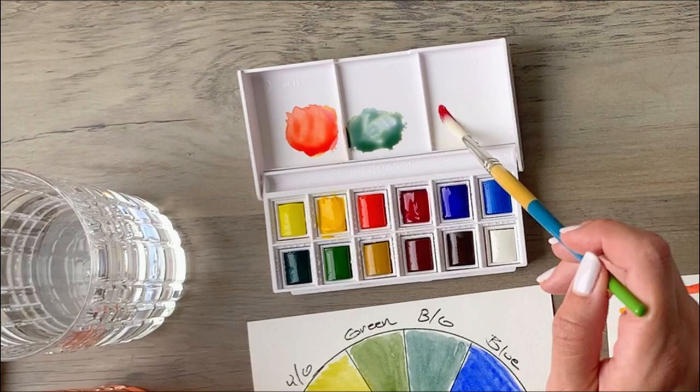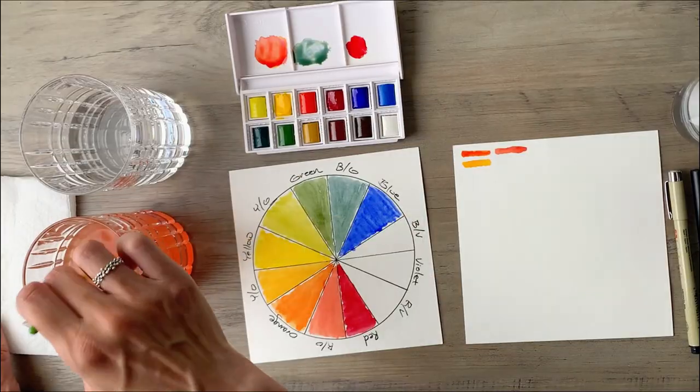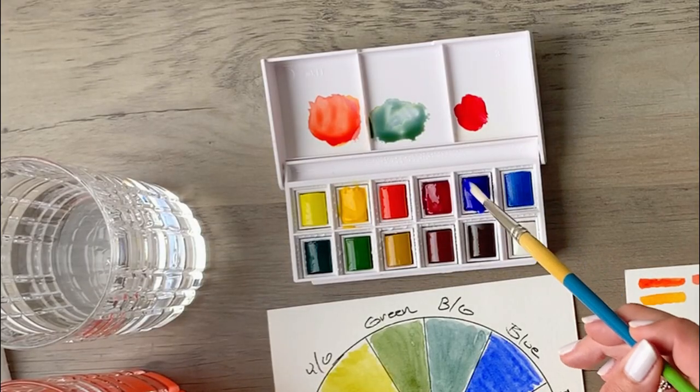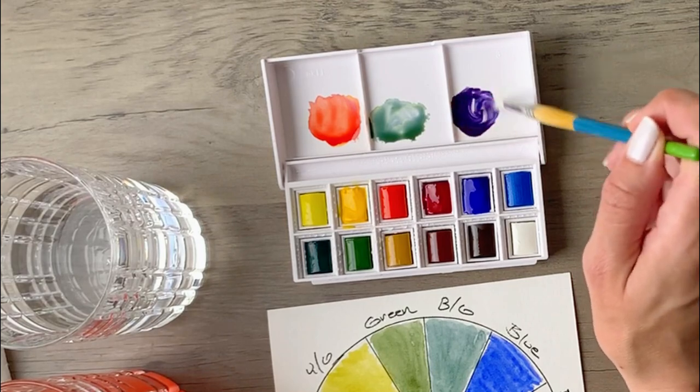Let's start getting into the purples and the violets. So you're going to take some red and lay that down and then pick up about an equal amount of blue after you clean off your brush and mix those two babies together. That'll give you a really nice violet.